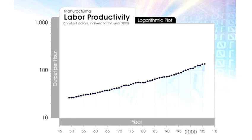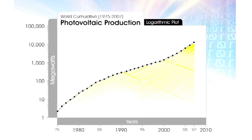And we're all concerned about energy and the environment. This is a logarithmic graph representing a smooth doubling every two years of the amount of solar energy we're creating, particularly as we're now applying nanotechnology — a form of information technology — to solar panels. And we're only eight doublings away from it meeting 100% of our energy needs, and there's 10,000 times more sunlight than we need.